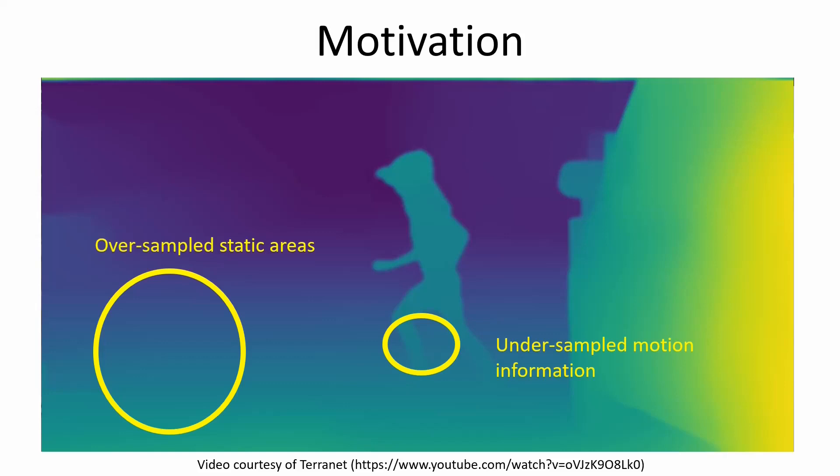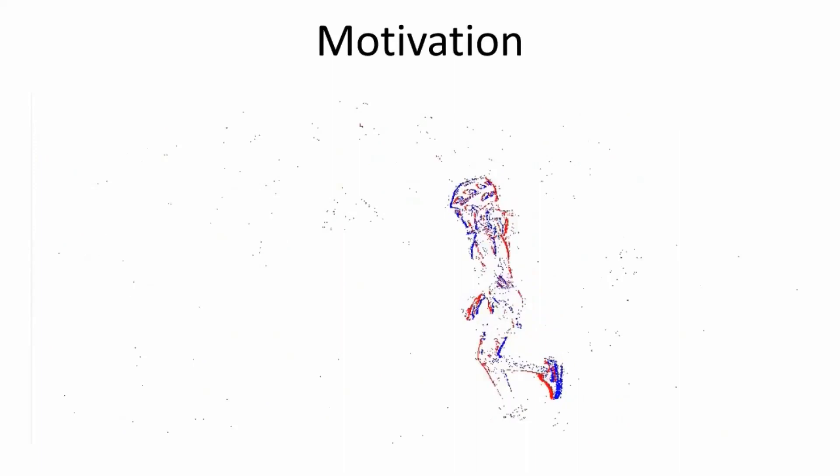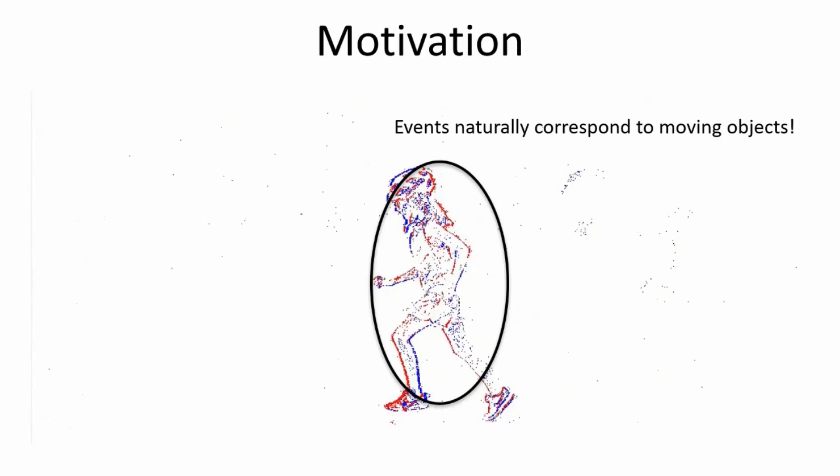Event cameras are bio-inspired vision sensors that output data asynchronously. Event cameras measure intensity changes with microsecond resolution, making them suitable for high-speed applications. We propose to use an event camera to identify these areas of interest to guide the depth sensor because events naturally correspond to moving objects.